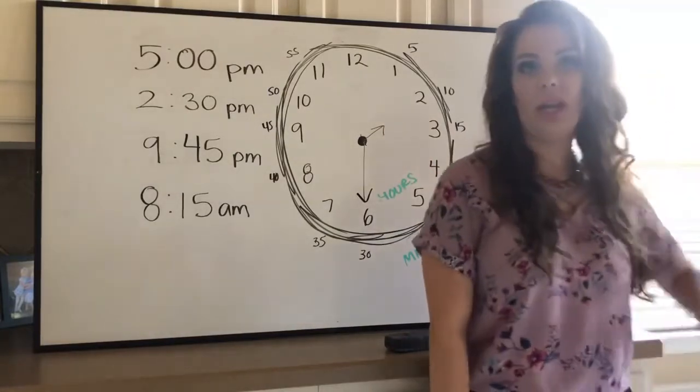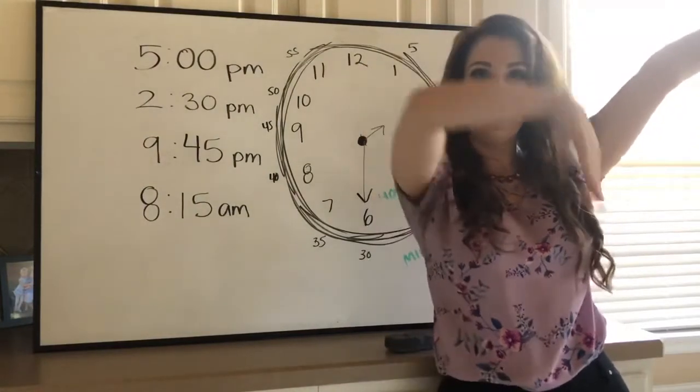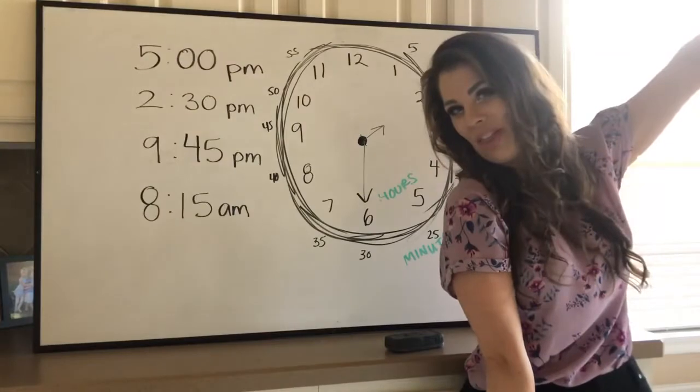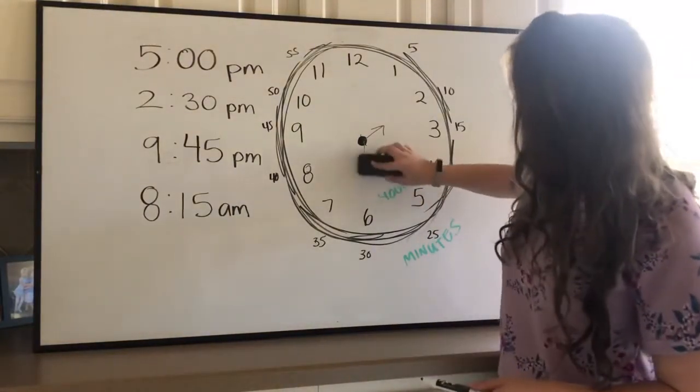So if it was 2:30, your two would be over here, your hour hand, and your 30 would go straight down. That would be 2:30. Did you get that one right? I sure hope so.